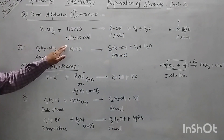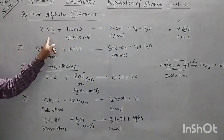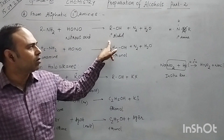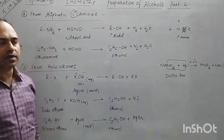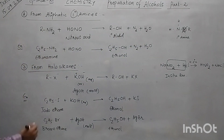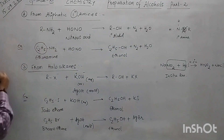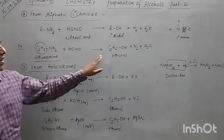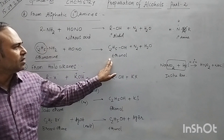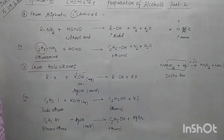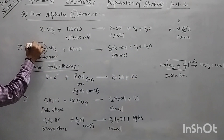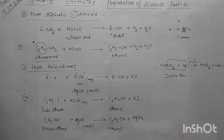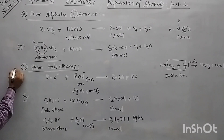On reaction with nitrous acid you will get a primary alcohol plus nitrogen and water. For example, if R is an ethyl group, ethylamine in the presence of nitrous acid gives you ethanol plus nitrogen plus water. You can replace R with methyl group or propyl group, etc.